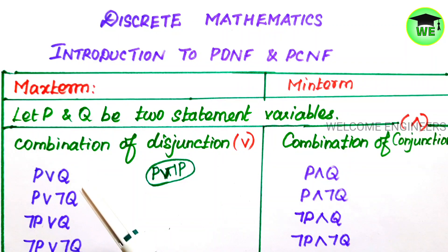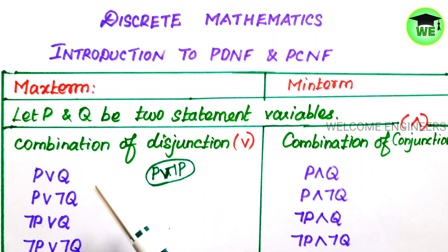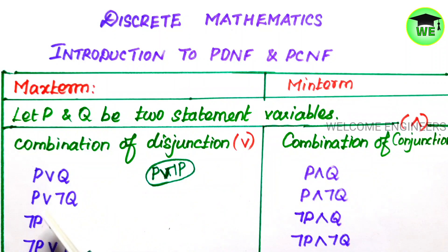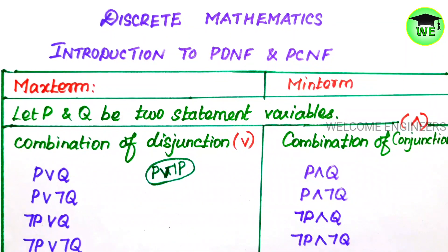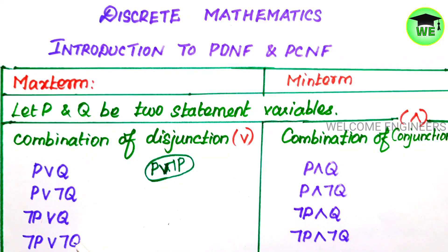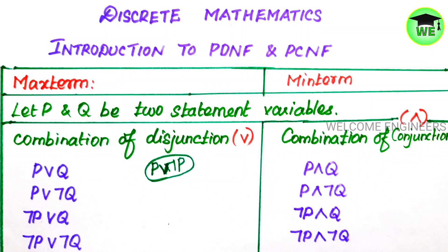When we construct the combinations of P and Q we get: P or Q, P or negation Q, negation P or Q, and negation P or negation Q. These are our max terms.